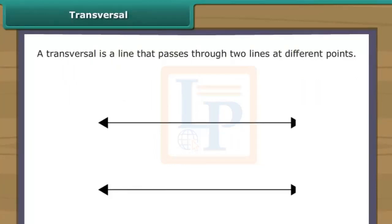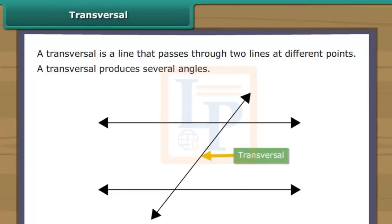Transversal. A transversal is a line that passes through two lines at different points. Mostly, a transversal produces several angles.